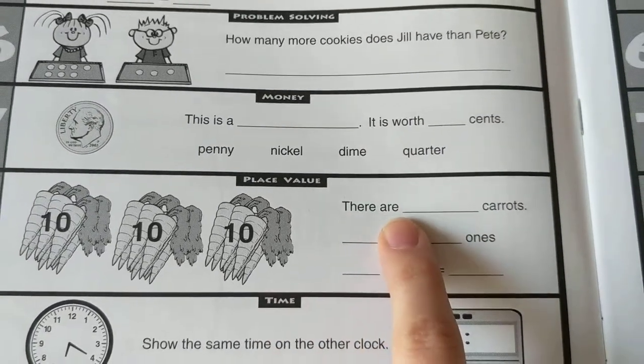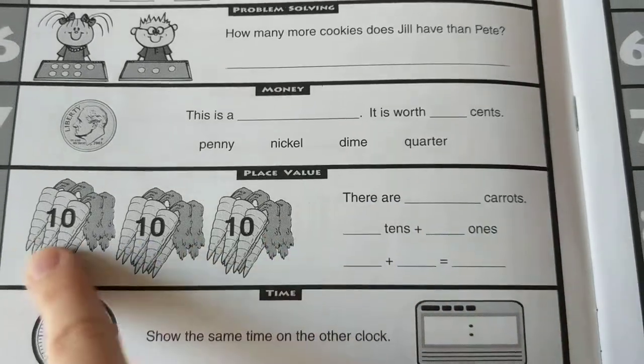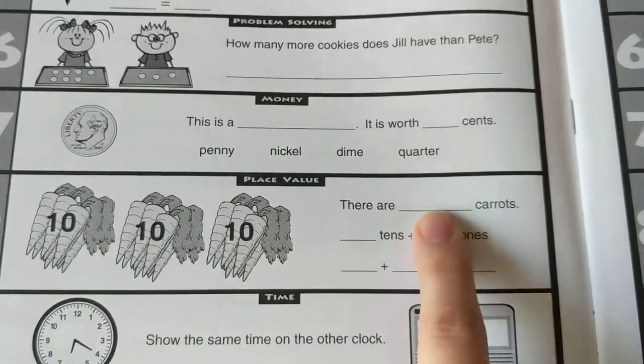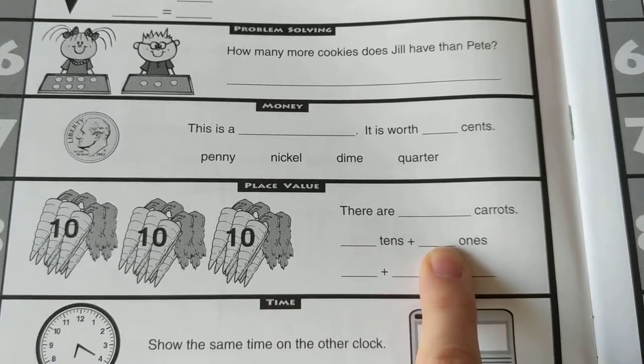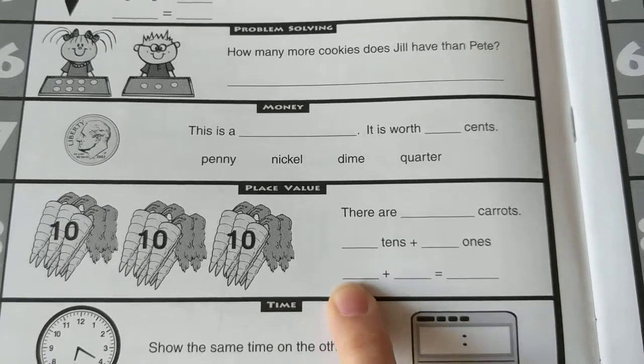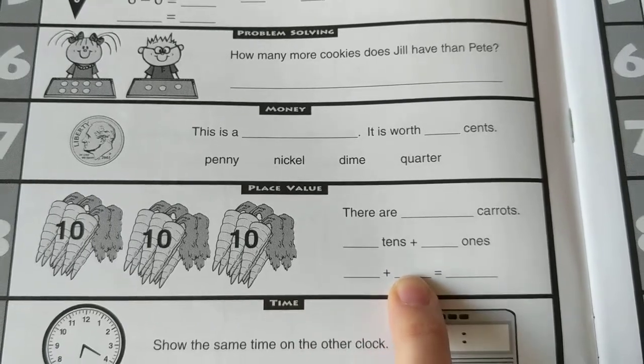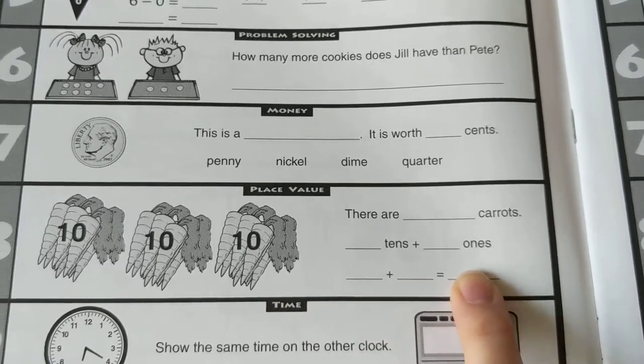Number eight, there are how many carrots? How much all together? Write that there. How many tens are in that number? And how many ones are in that number? And then write your value of your tens, your value of your ones, and what is that equal?